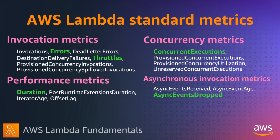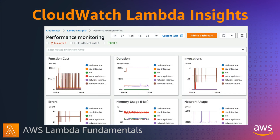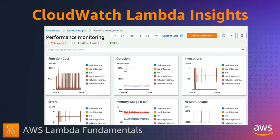Asynchronous invocation metrics help track how many asynchronous events are queued for processing, how long an event has been waiting to be processed, and any events that are dropped. You can also enable CloudWatch Lambda Insights for your functions, which provide additional system-level metrics, including CPU time, memory, disk, and network usage.